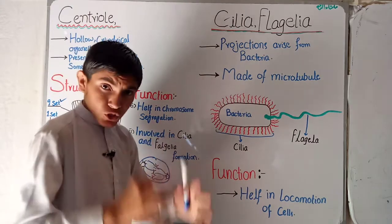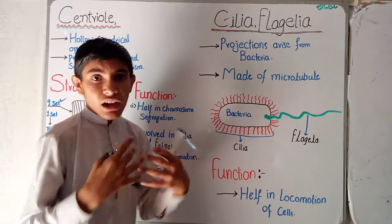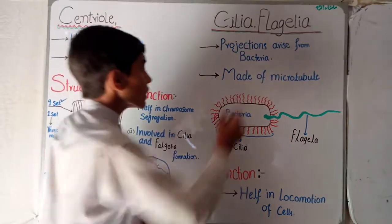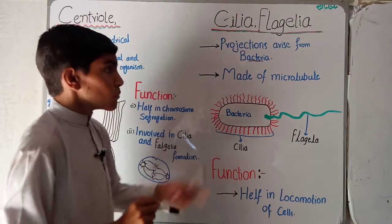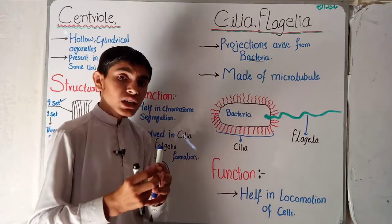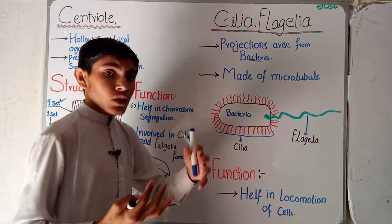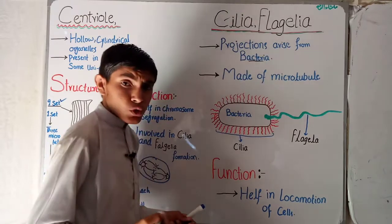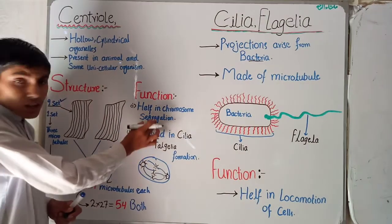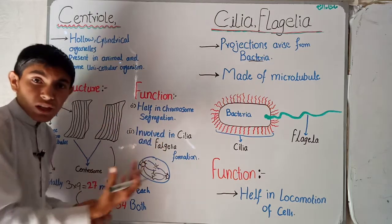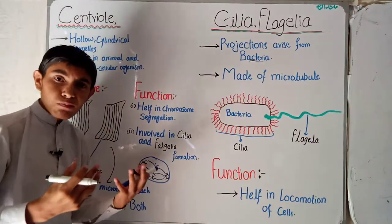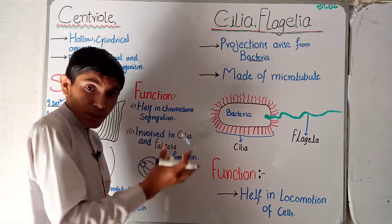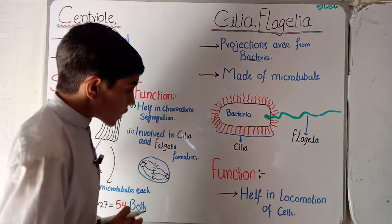These short and longer projections arise from some specific cells. Generally, cilia and flagella arise mainly from bacterial cells. They are made of microtubules, just as centrioles are, and the centrioles help in the formation of cilia and flagella.